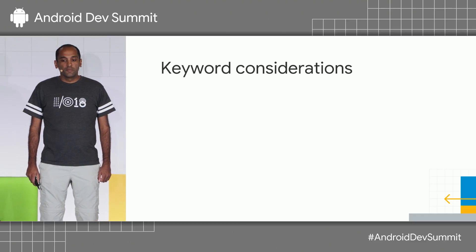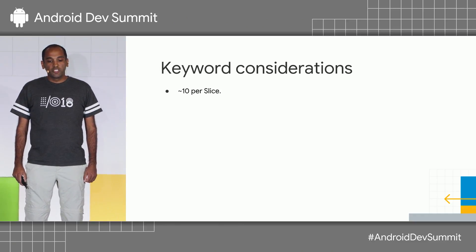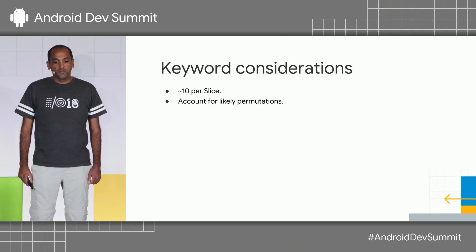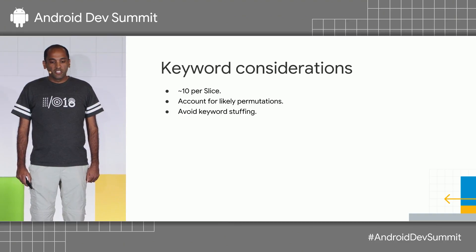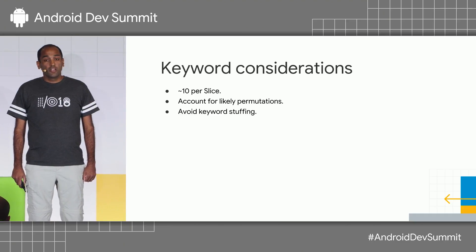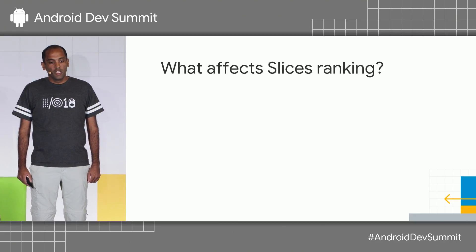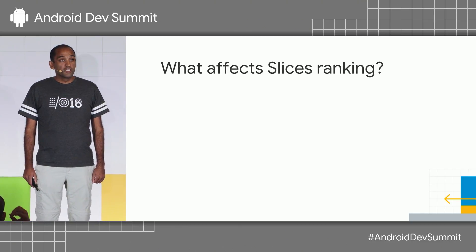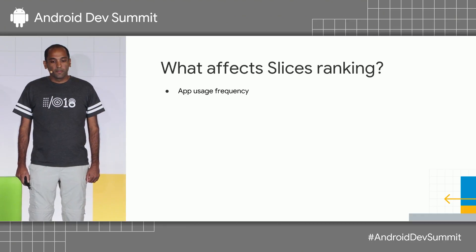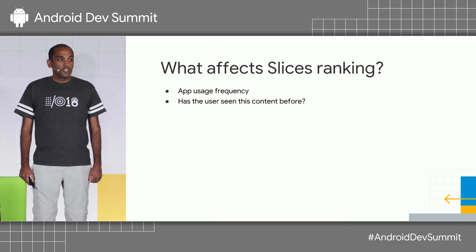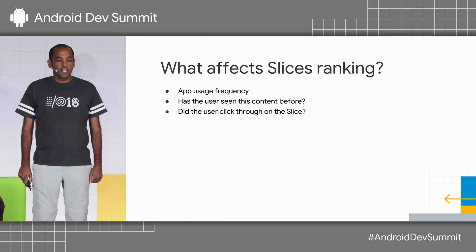Arthur showed us how to set keywords for general term Slices using the Firebase App Indexing API. Here are some best practices for keywords: limit keywords to 10 per Slice, and account for likely permutations — for example, 'music volume' instead of 'media volume' — but don't account for all misspellings. Most importantly, avoid keyword stuffing. Use the minimum number of keywords needed per Slice, as your app Slice will be demoted in search rankings if you use too many irrelevant keywords that users don't tap on. The most important signal for whether your Slice appears is the number of times the user uses your app on their device. It's also important that the user has viewed and interacted with the content previously. Log user actions through the App Indexing API so we know the user interacted with your Slice content.